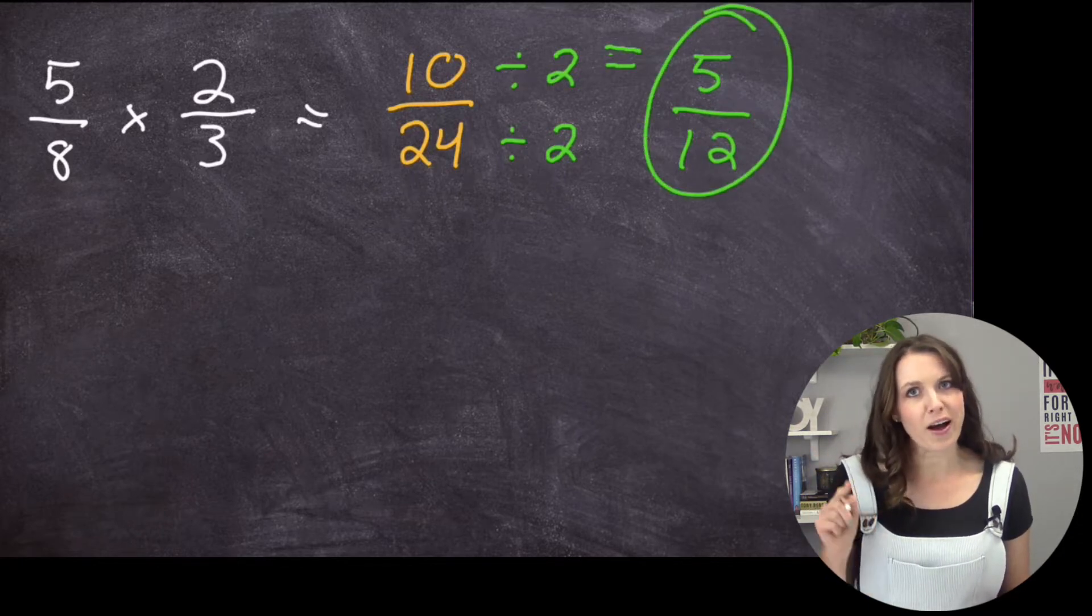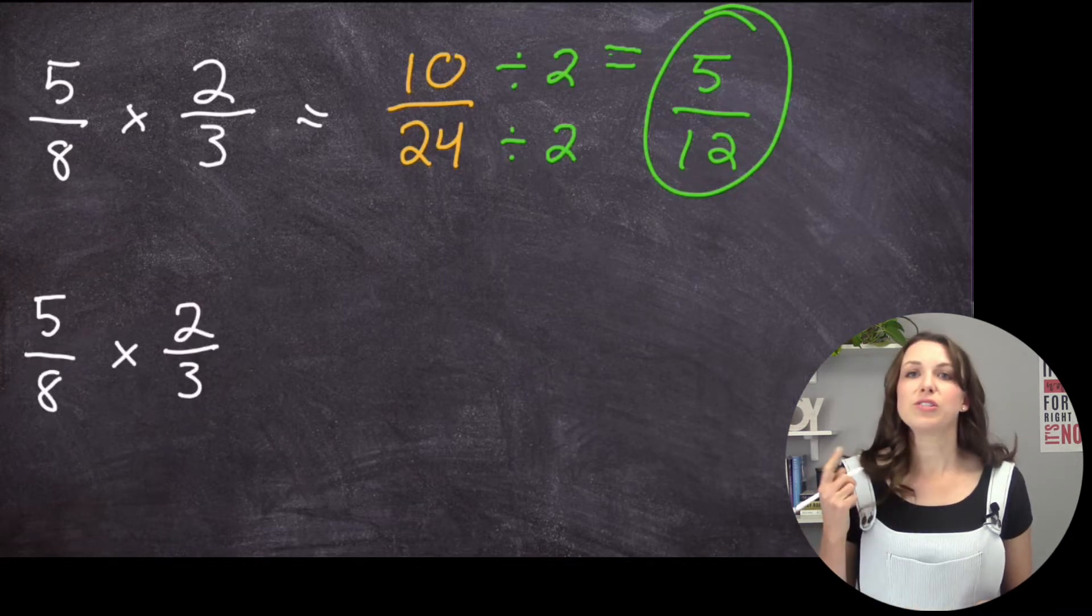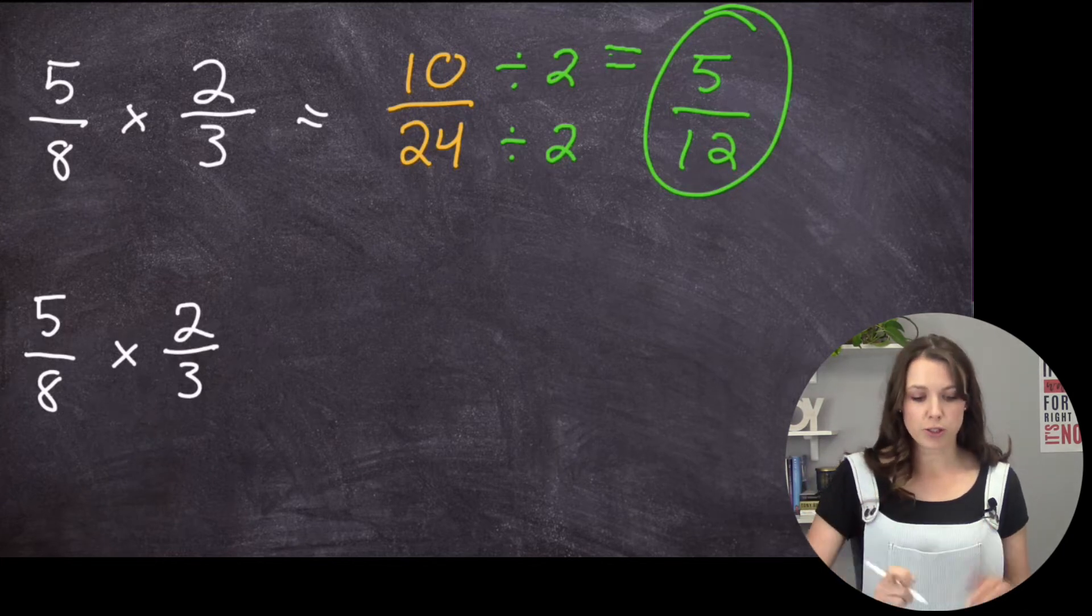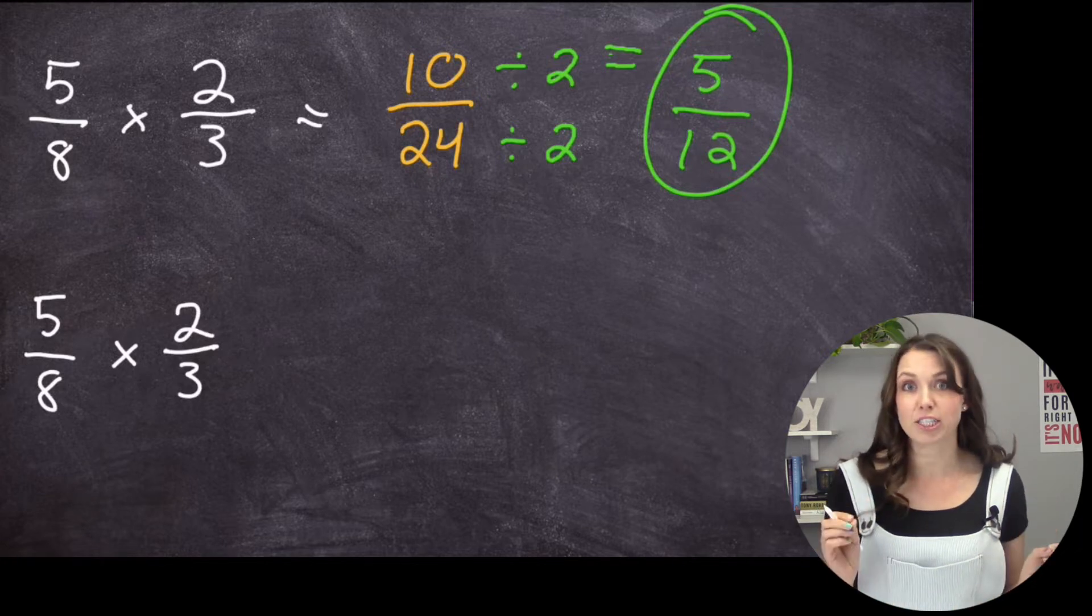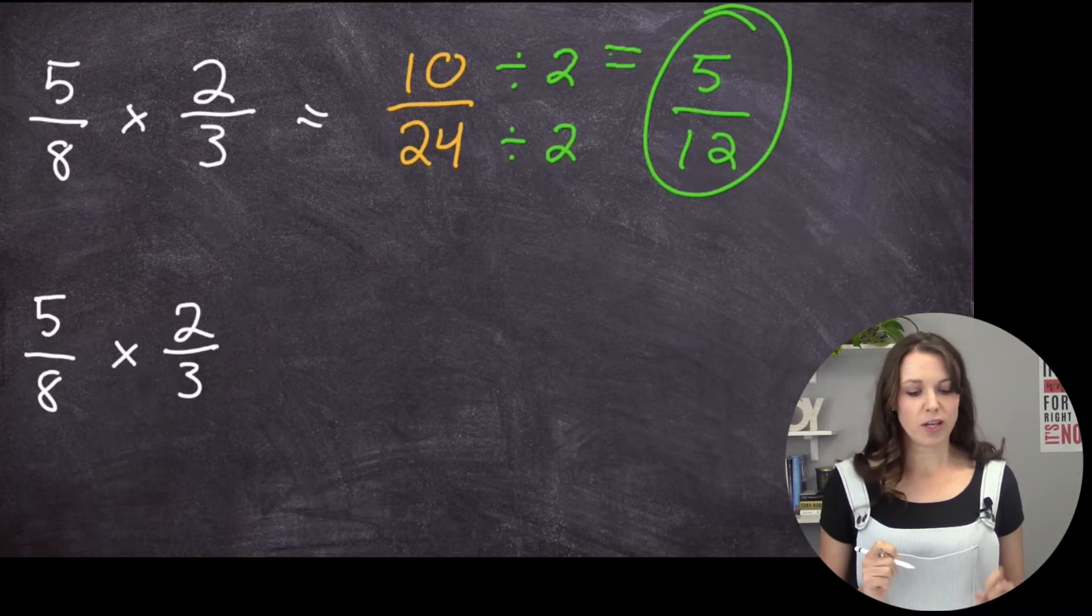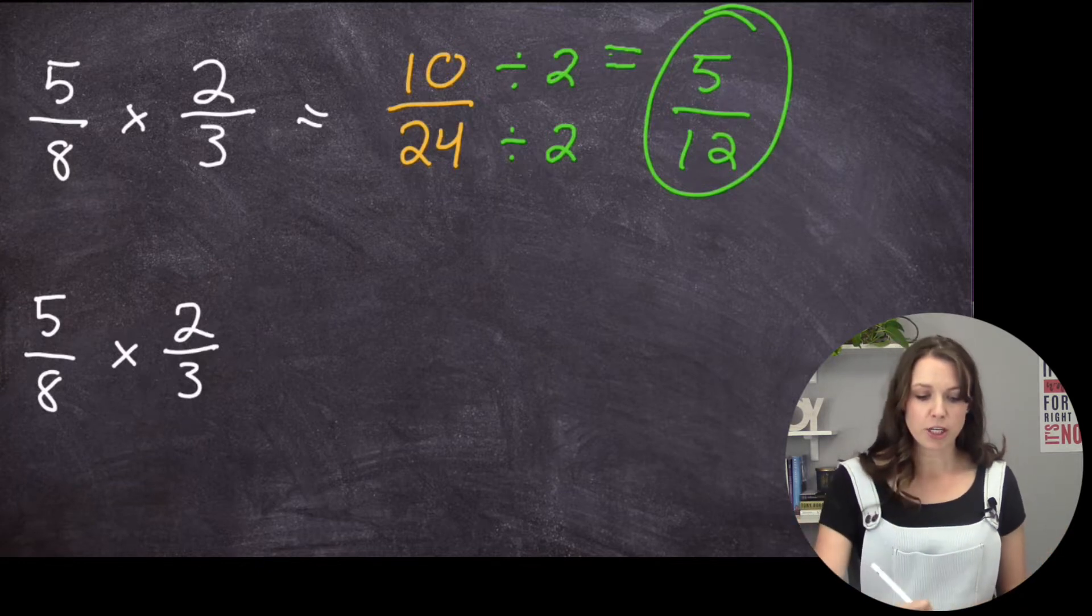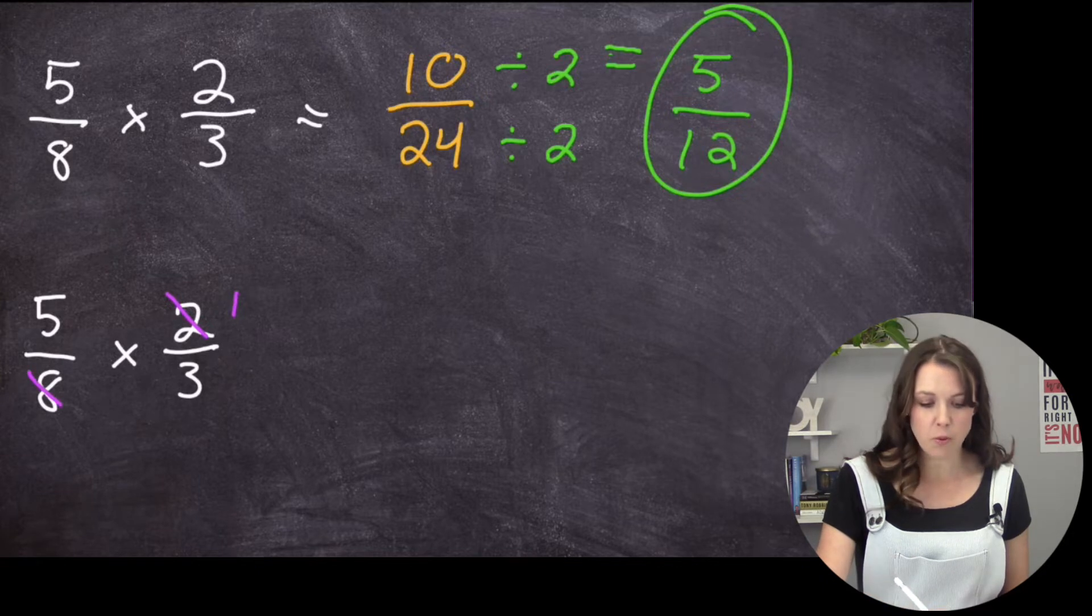But I want to show you a little trick that makes it just a little bit easier. So this step here is called cross-canceling. So what you do is you look, we have 5 and 3. Is there a number that goes into 5 and 3, a common factor? Hmm, no. What about 8 and 2? Is there a number that goes into 8 and 2? Yes, 2 does, right? 2 goes into 2 one time and 2 goes into 8 four times.